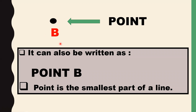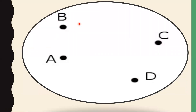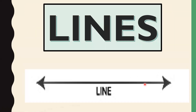You can call it a dot or you can call it a point. In mathematical terms, this is a point. We can give it a name — like A, B, or any name. So this is a point, and we can write it as point B. A point is the smallest part of a line.